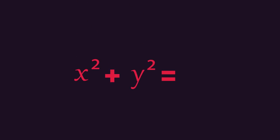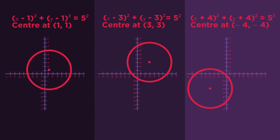So the equations are always x squared plus y squared equals the radius squared. What if the center isn't at the origin?